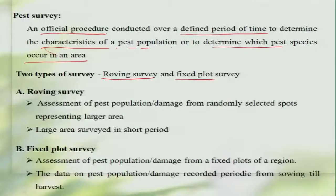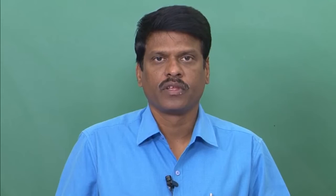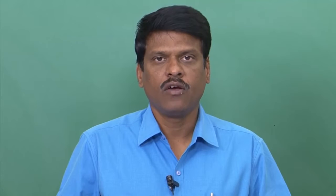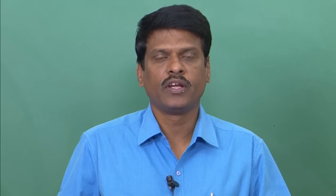The roving survey can be done over a larger area within a short period of time. If you would like to know the pest situation irrespective of whatever the pest might be in a larger area, we normally take up a roving survey. If you want to look at a specific pest in a specific area, then we rely upon a fixed plot survey, where the assessment of the population or damage from the pest is done through fixed plots of a region, surveying repeatedly over a period of time. This is normally done over a crop growth period.